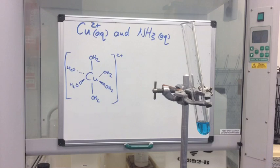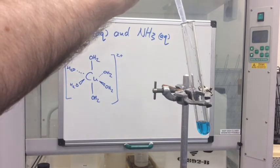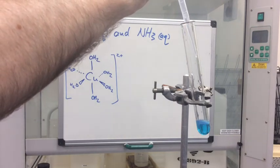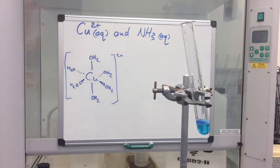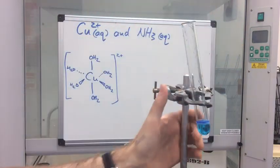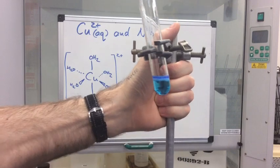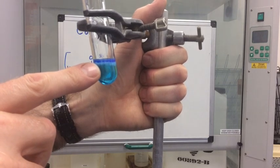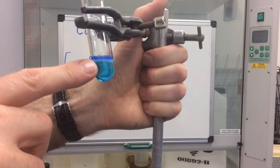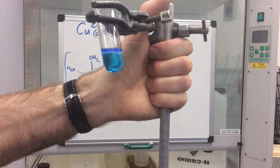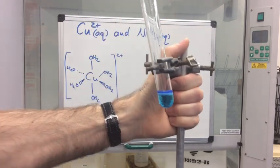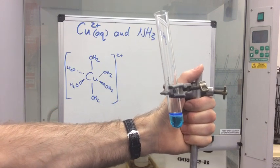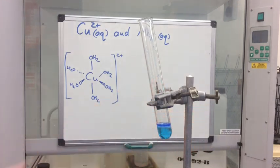I'm going to add a few drops of aqueous ammonia and see what happens. Hopefully you can see we've got a blue precipitate. We've seen this before when aqueous hydroxide ions react with aqueous copper 2+ ions — that is copper 2 hydroxide. I'll explain how that's formed in a moment.